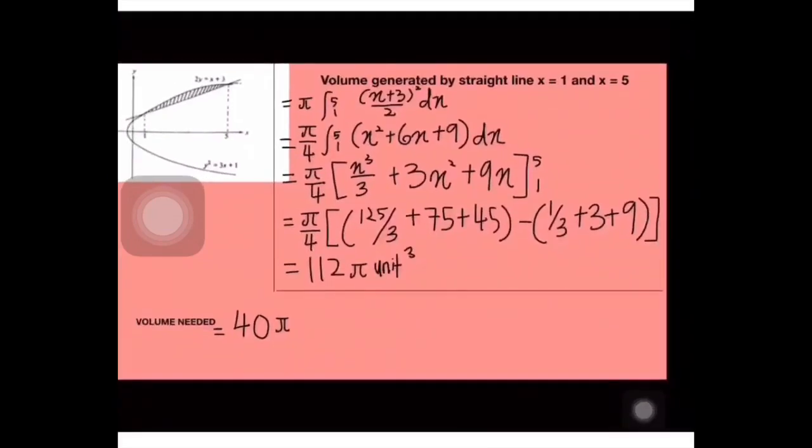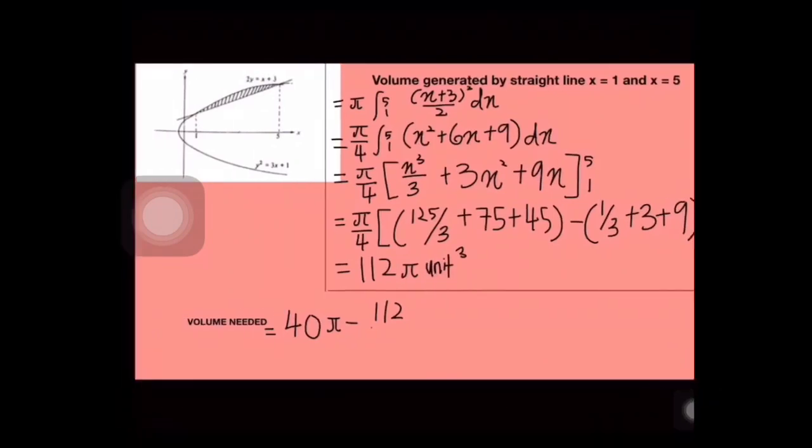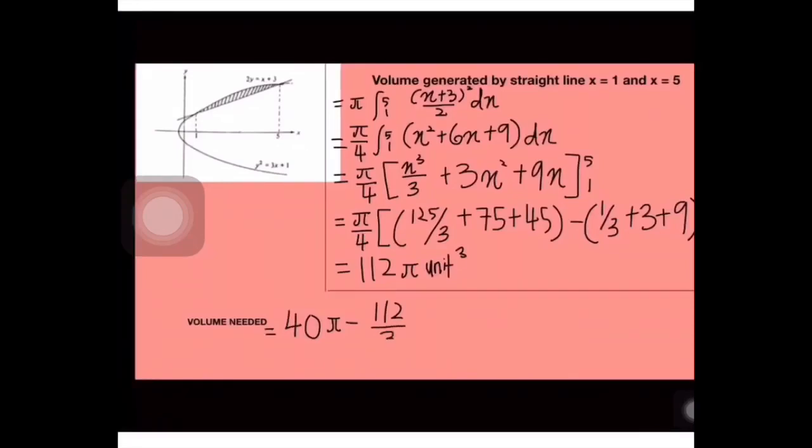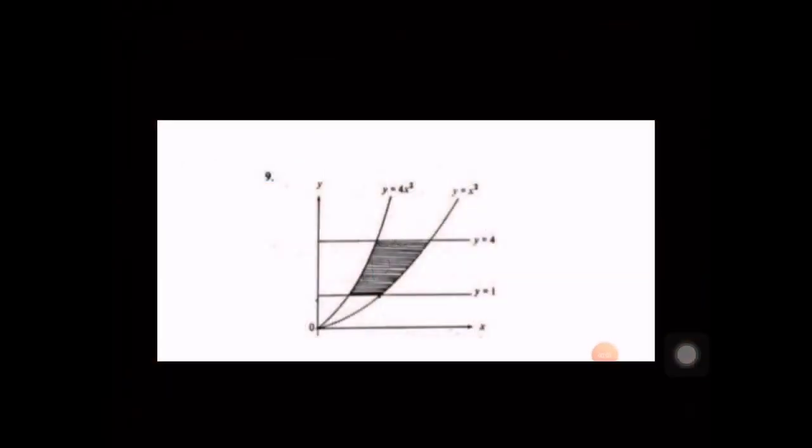Sepatutnya jawapan dia 112 per 3, tapi atas kesilapan narrator saya, kita maafkan dia. Kita dah dapat volume untuk curve dan straight line. Celah-celah tu nak dapat, kita kena tolak dia. Dapat 8 per 3 pi unit cube. Itu je. Sekarang saya akan pass dekat Wani pula untuk explain next question.